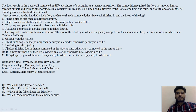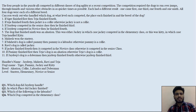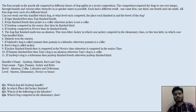Hello everyone, welcome to Leads Crit. Today we're going to discuss an LRA puzzle. Four people in the puzzle all competed in different classes of dog agility at a recent competition. The competition required the dogs to run over jumps, through tunnels, and various other obstacles in as quick a time as possible. Each had a different result: one came first, one third, one fourth, and one ninth. All four dogs were each of a different breed. We need to work out who handled which dog, at what level each competed, the place each finished, and the breed of the dog. The handler names are Jadeep, Mahesh, Ravi, and Teja, then dog names, then breed, then level.